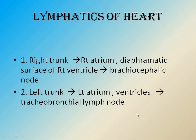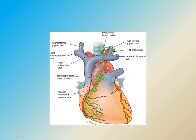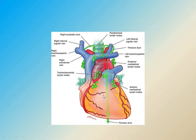Lymphatics of the heart: the right trunk drains from the right atrium and the diaphragmatic surface of the right ventricle, and passes to the brachiocephalic node. The left trunk drains the left atrium and ventricle, and is taken by the tracheobronchial lymph node.